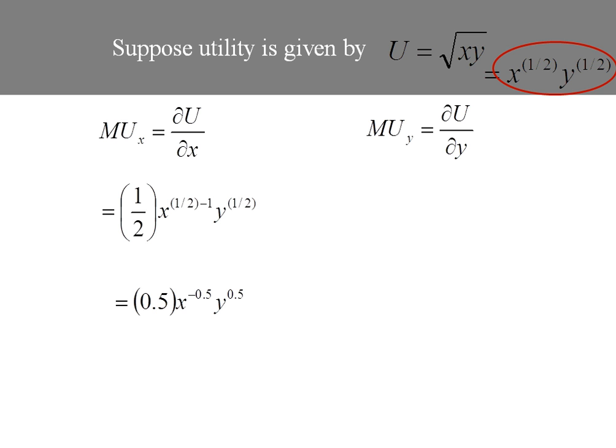Combining the one-half minus one, which is the exponent on x, I get negative 0.5, and y's exponent is also 0.5.